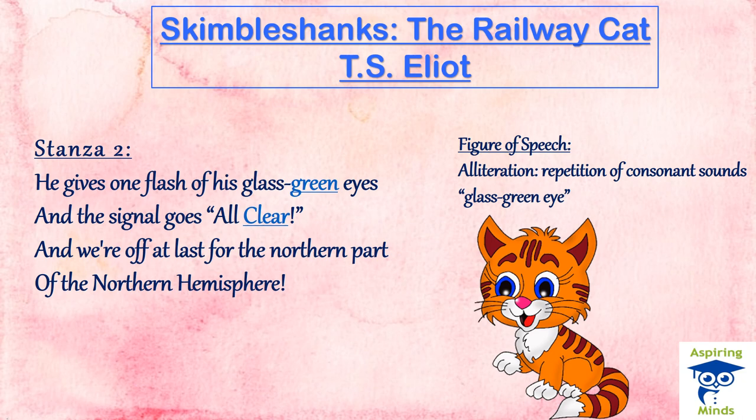In stanza 2, Skimble Shanks has arrived and through the flash of his glass green eyes he is giving the signal all-clear for the train to depart. The phrase 'glass green eyes' is a figure of speech called alliteration. It is through his passing of the signal that the train is ultimately able to depart, showing the integral role of Skimble Shanks in the functioning of the train. The train is off at last for the northern part of the northern hemisphere — a phrase that will be explained later in the video.